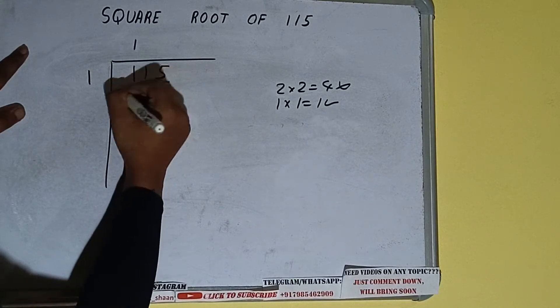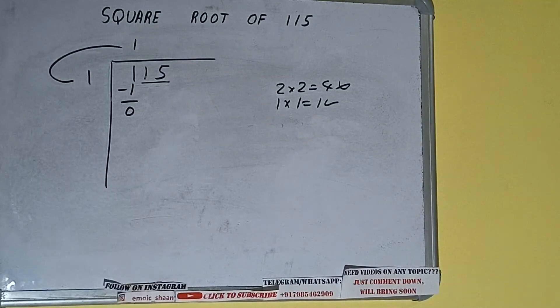So 1 here and 1 here, 1 subtract 0 will be left. We did 1 into 1 so add both. So 1 plus 1 will be 2.